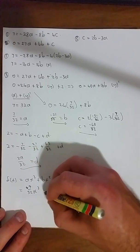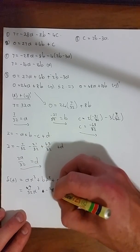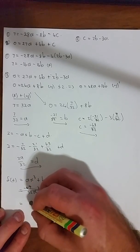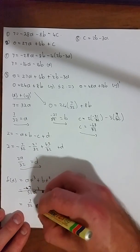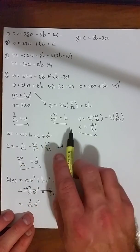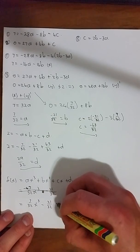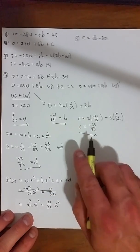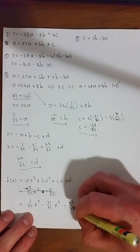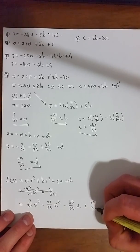x³ plus b, which was -21/32. Let me just write that neater. So we have 7/32 x³. b was -21/32 x². c, -63/32 x, and d, 29/32.